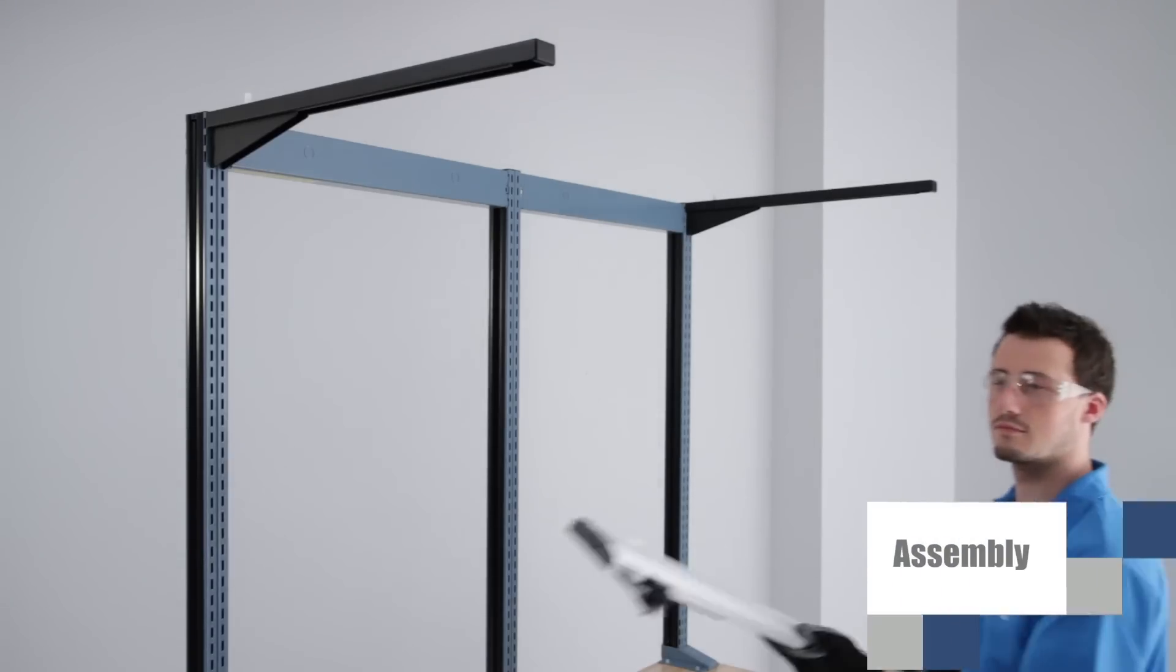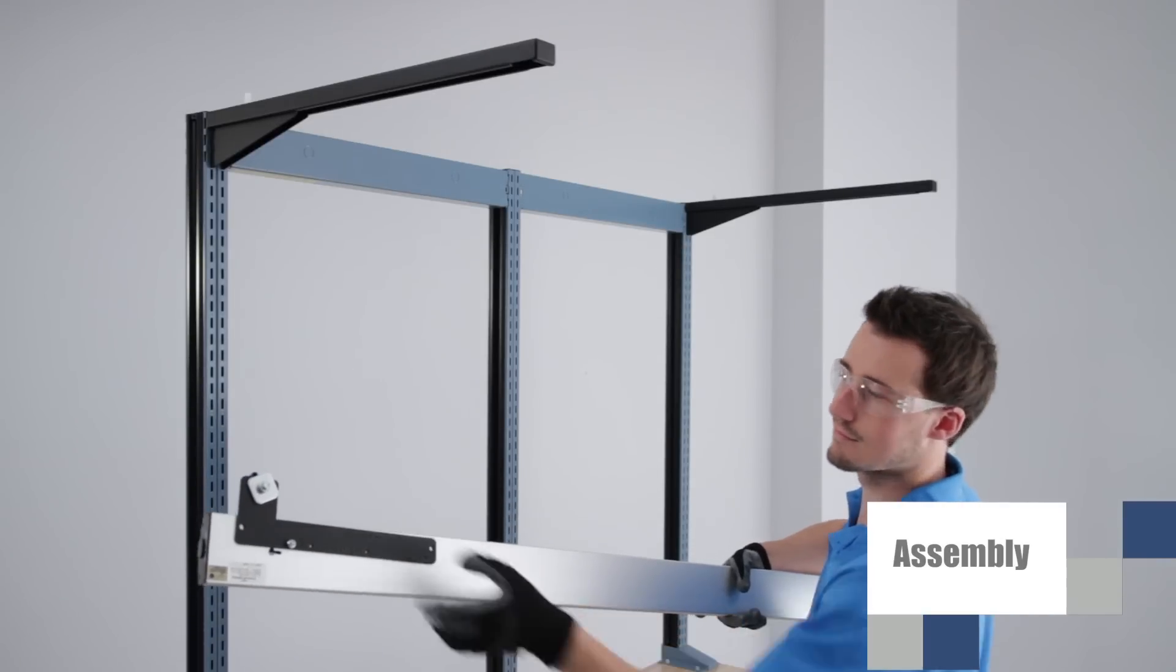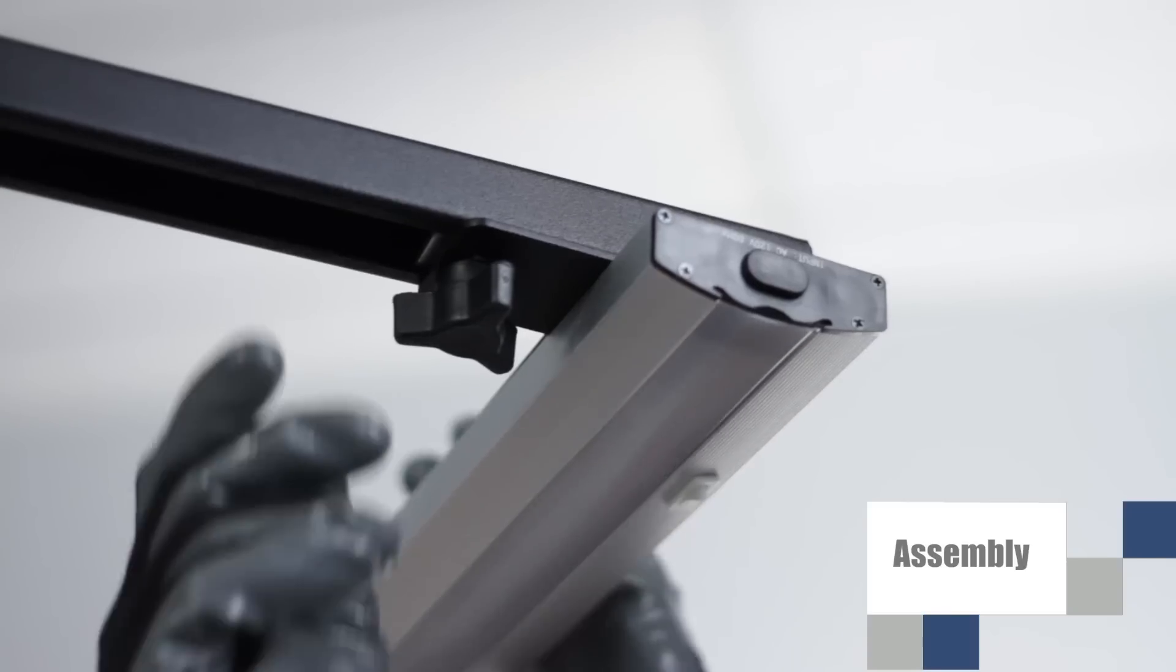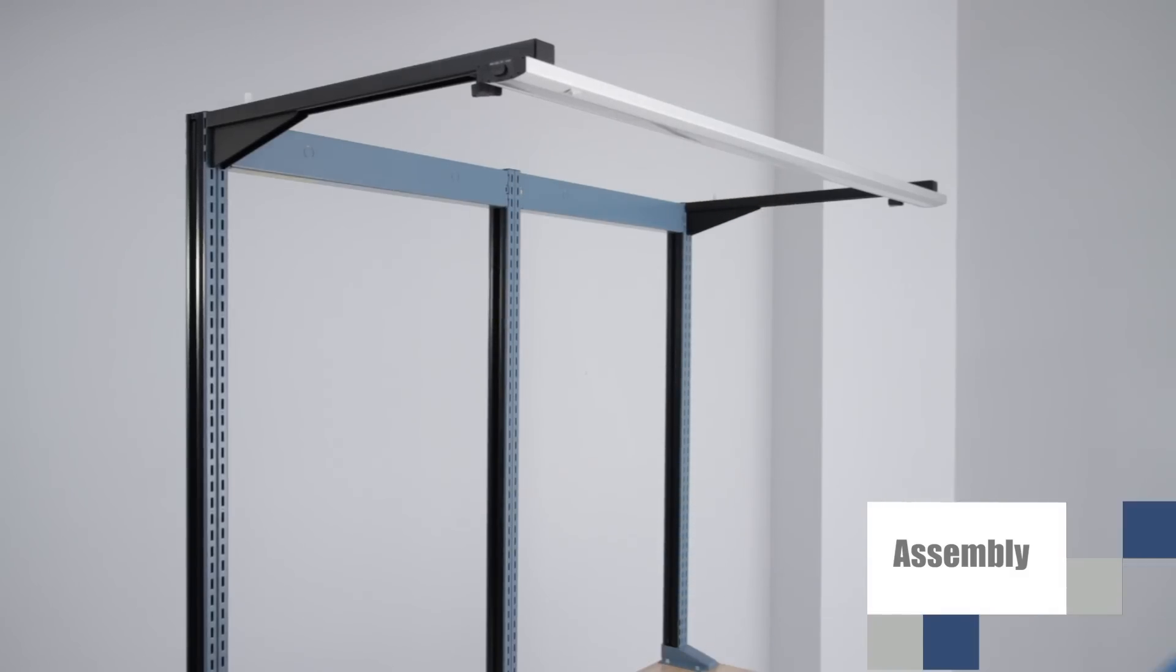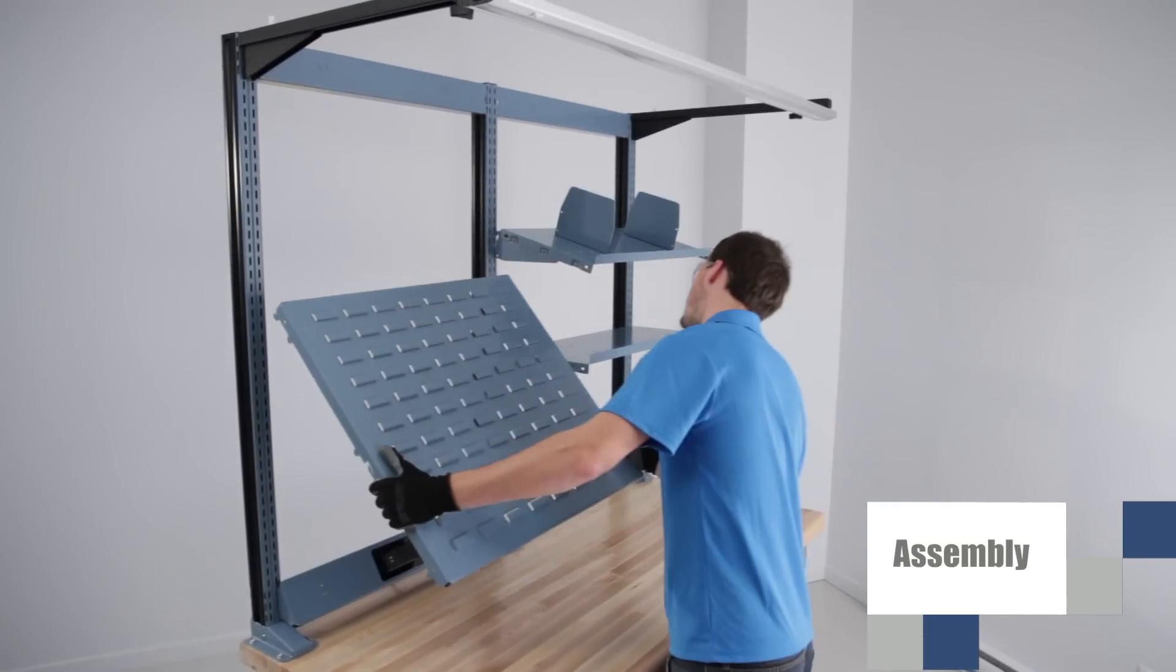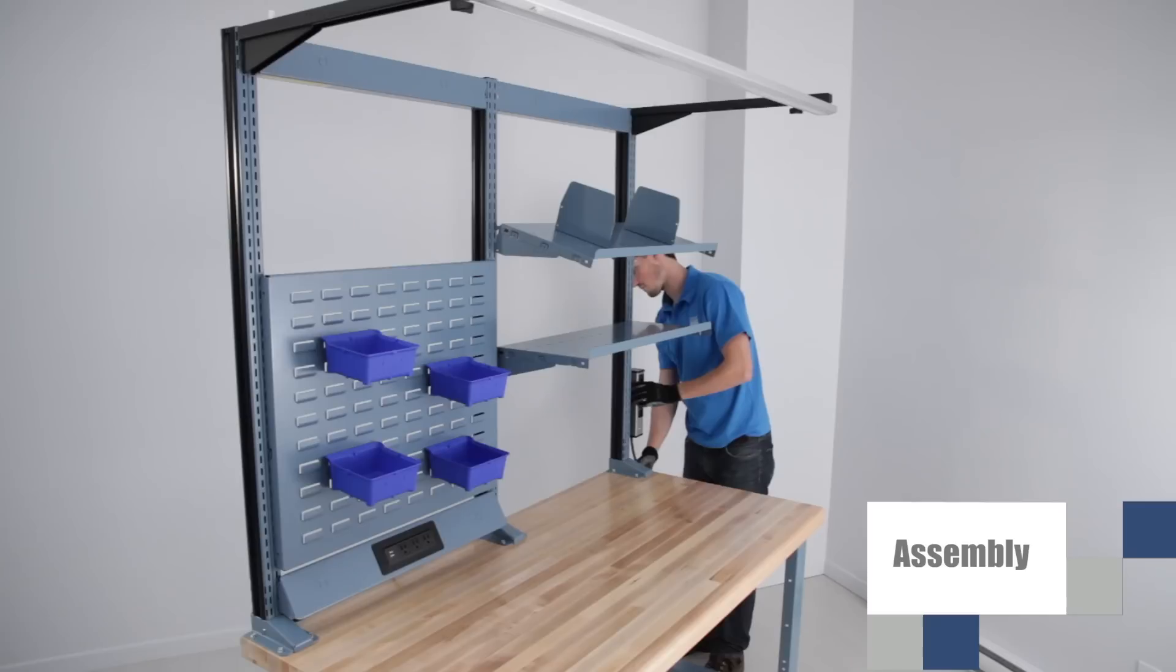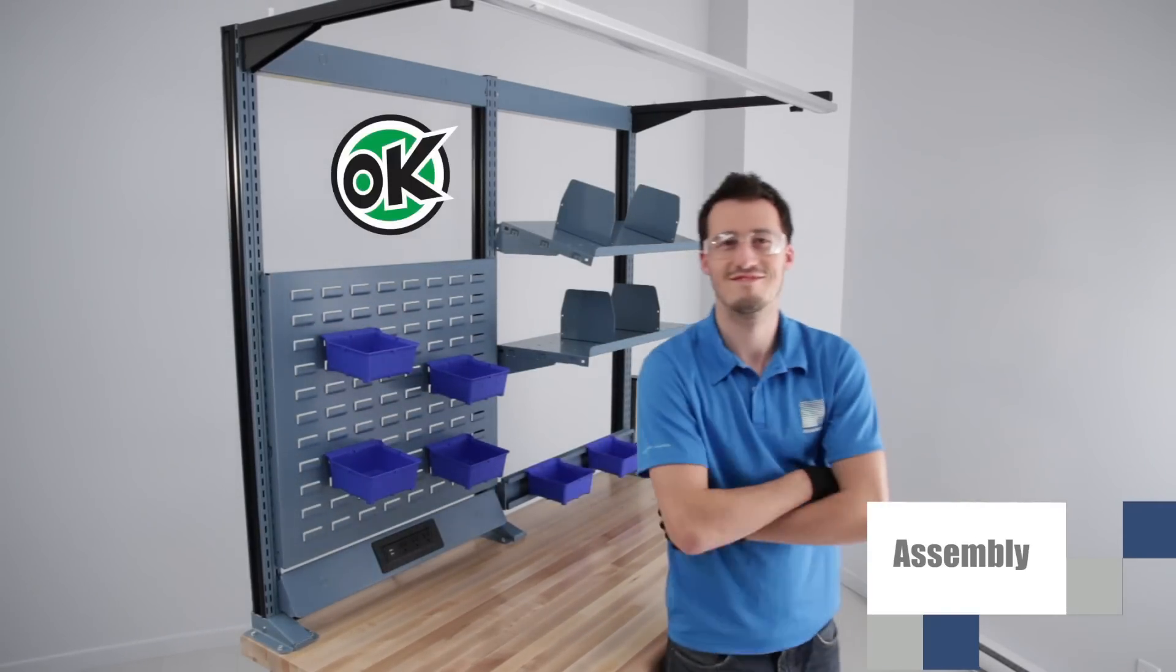The last assembly demonstration is for the overhead LED light that is installed on the overhead cantilever supports. In this case, the adapter is pre-assembled on the light and then the entire unit is slid into the support from one end. The handle is then tightened to keep everything in place. Here are some other accessories that can be installed on the WM uprights. And there you have it, a well-organized workstation that's ready to be used.